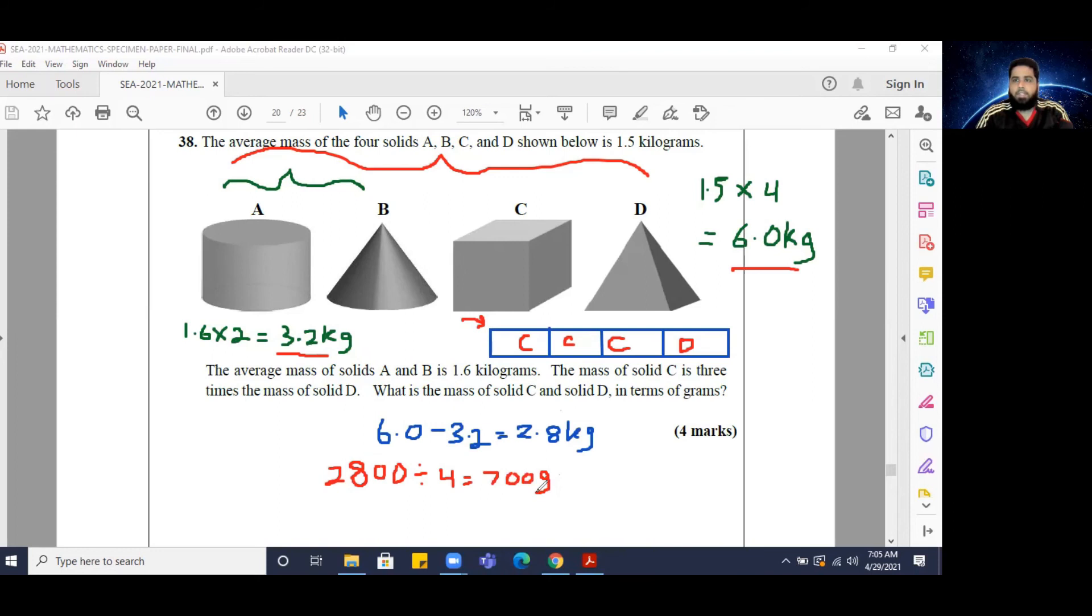Okay, so 700 grams is the size of one of these shares or one of these equal parts that this bar model is broken up into. And incidentally, D is only one of these three times. So therefore, the mass of the solid D would be equal to 700 grams.